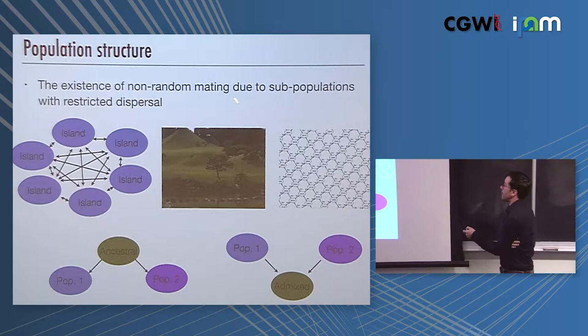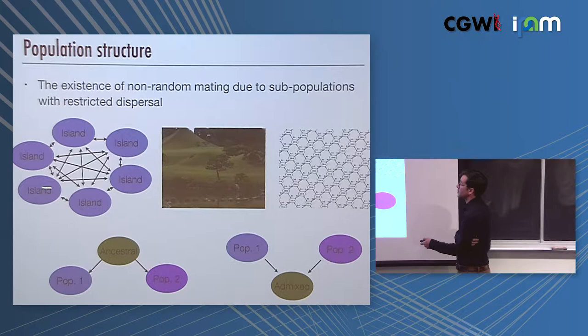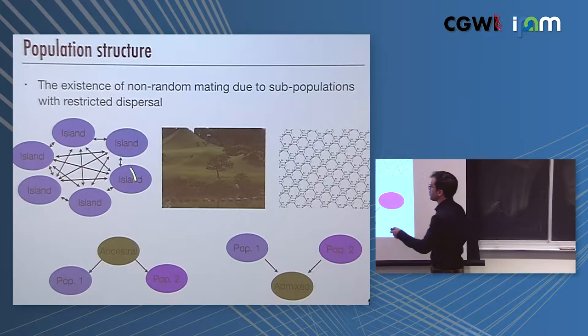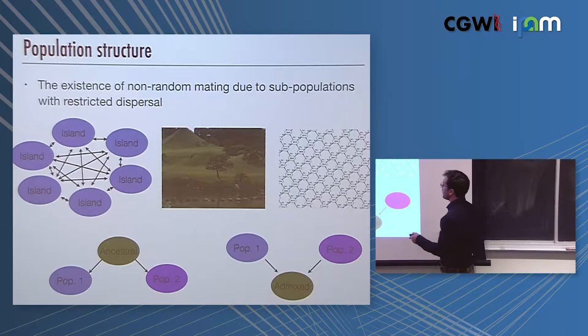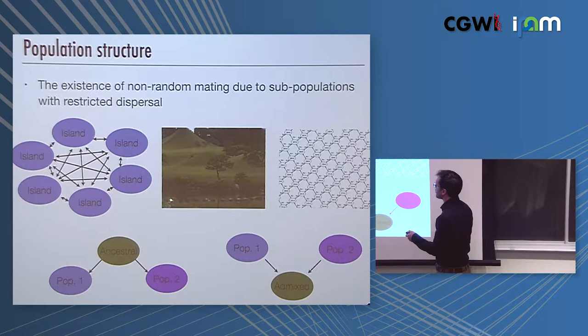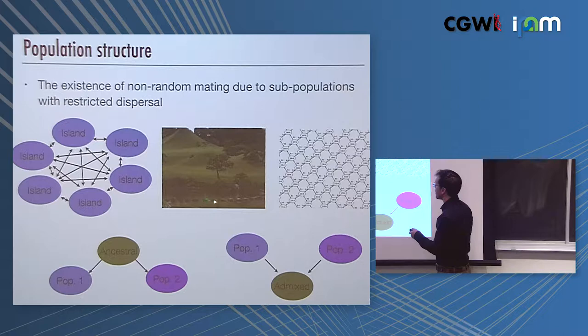It's really the existence of non-random mating due to subpopulations with restricted dispersal. One form is to think about a set of islands that are all exchanging migrants with one another in a completely unstructured way. Or at the other extreme, these stepping stone type models, named after the stepping stones in Japanese gardens where populations are arranged along a chain with each stone representing a population and exchanging migrants with its neighbors.